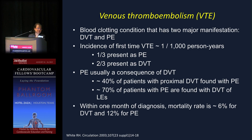Within one month of diagnosis, the mortality rate is about 6% for DVT and about 12% for PE. Those are really high mortality rates.